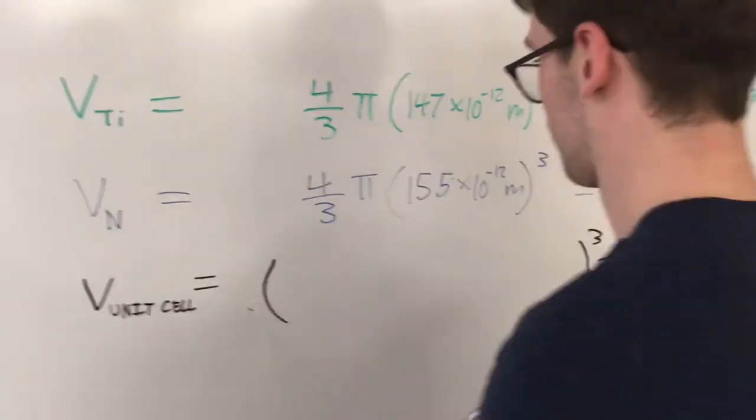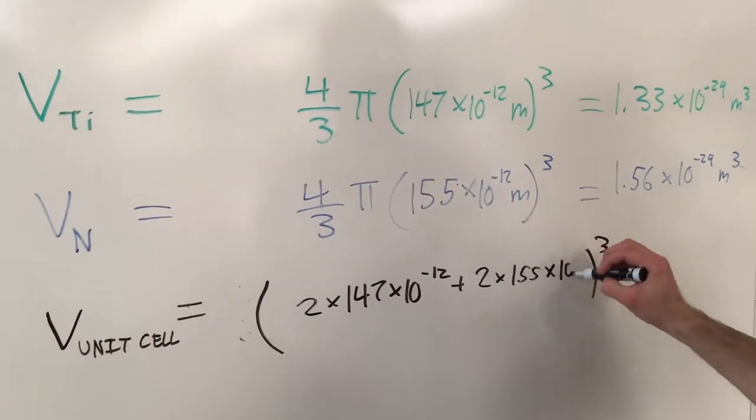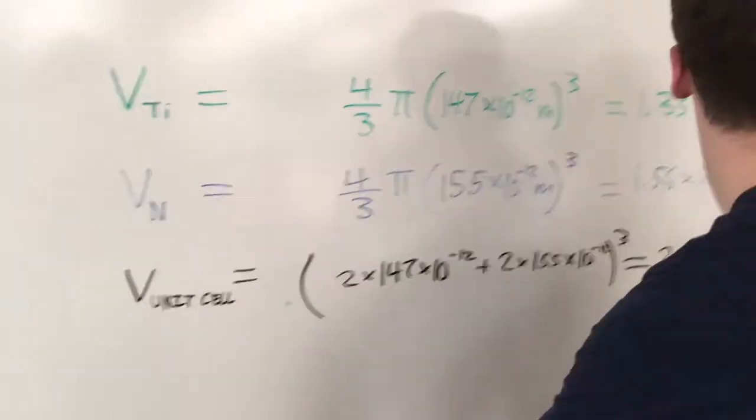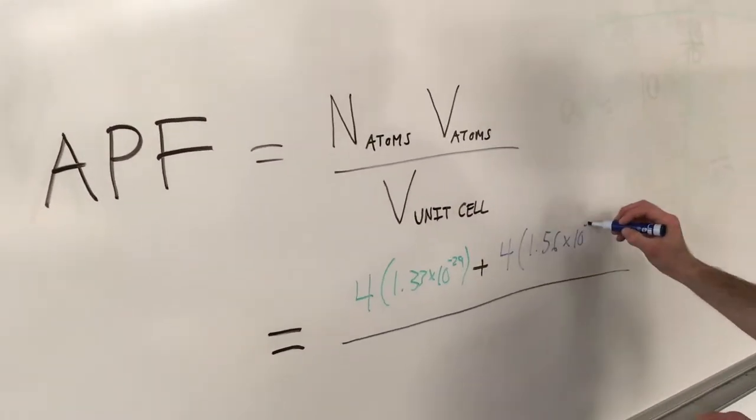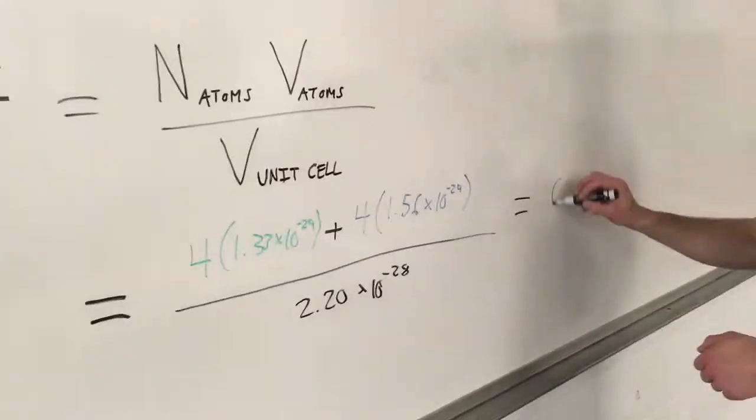We calculate the crystal structure to have an atomic packing factor of 0.53. This relatively low APF makes titanium nitride have low ductility because there is more space between atoms and more holes, making it harder for planes to move past each other and for the material to deform.